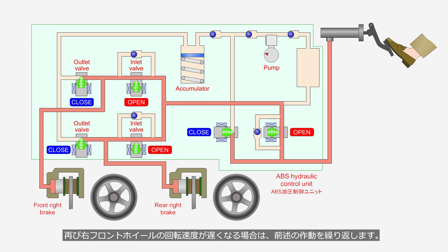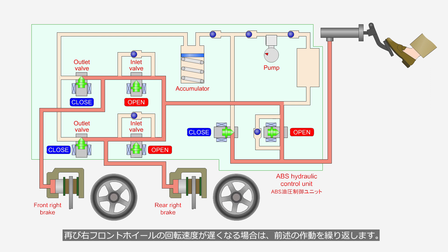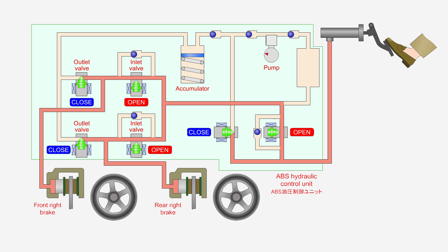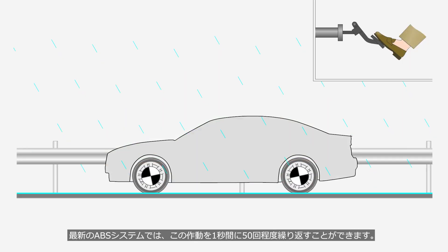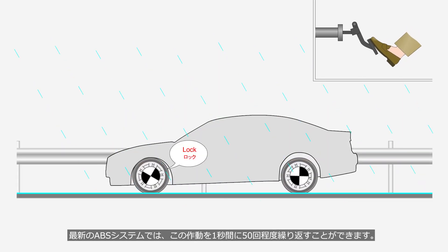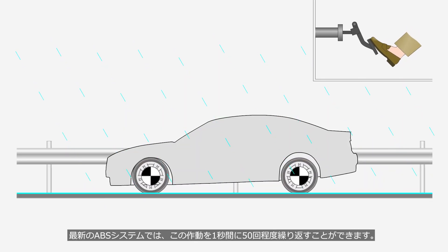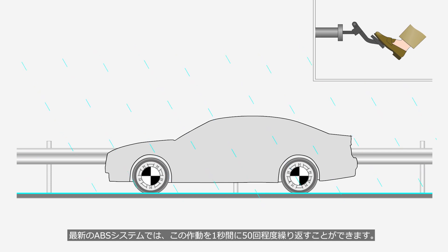If the rotational speed of the right front wheel slows again, the aforementioned process is repeated. In the latest ABS systems, this operation can be repeated approximately 50 times per second.